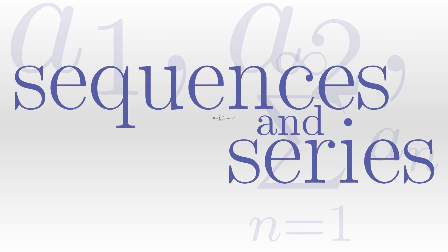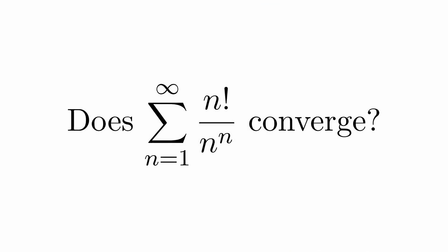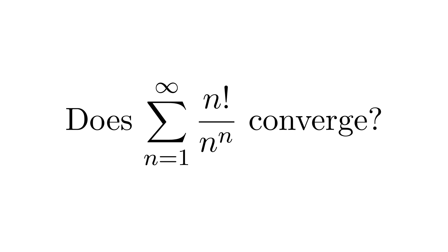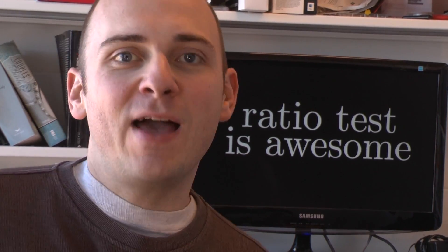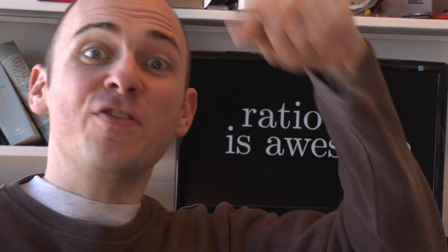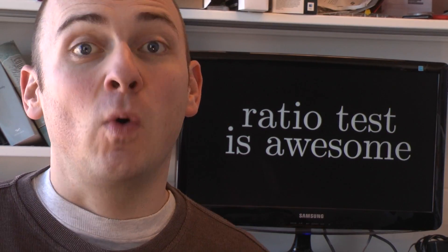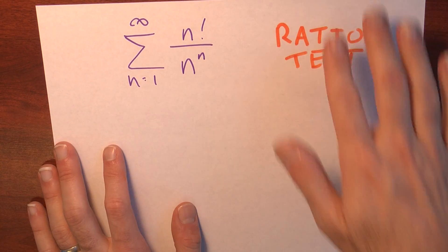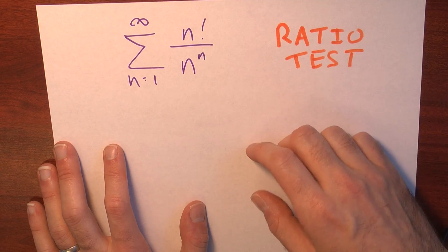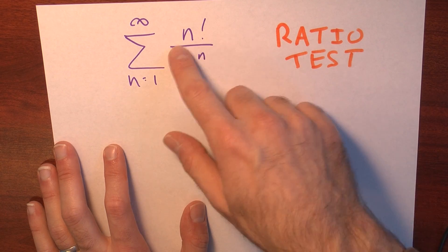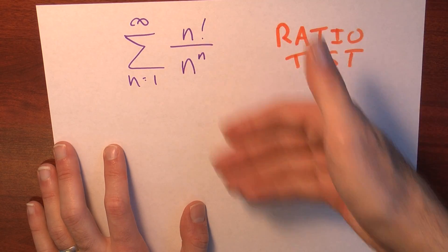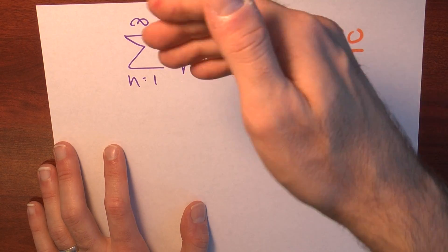The ratio test is awesome. What test should I apply? Well, for this series, the ratio test will work wonderfully. I can really tell that the ratio test is just going to be great for this, because I've got these factorials and these powers, so I can expect a lot of cancellation to happen.